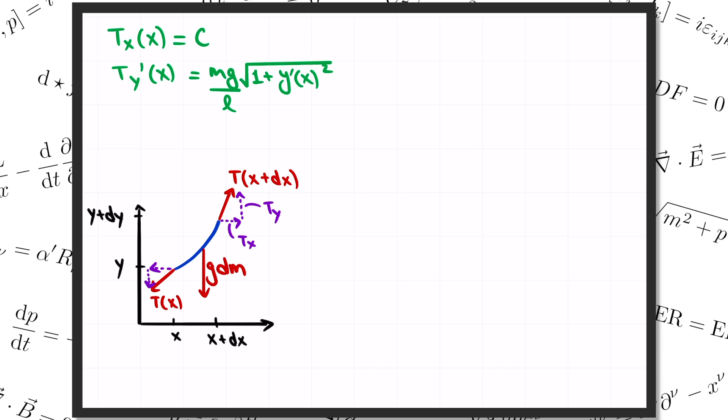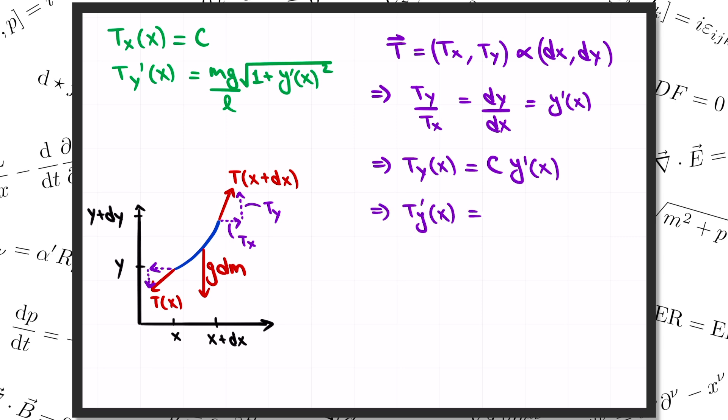The next thing we need to realize is that the horizontal and vertical components of the tension are not independent. Together they make a vector, with components T x and T y, and this vector has got to point along the tangent direction to the rope, which points along dx, dy. In other words, the ratio of T y over T x has got to be the same as the ratio of dy over dx, which is the slope y prime of the curve. Since T x was just a constant C, this gives us an equation that says that T y is equal to C times y prime of x. And if we take the derivative of that equation, it says that T y prime is equal to C times y double prime.